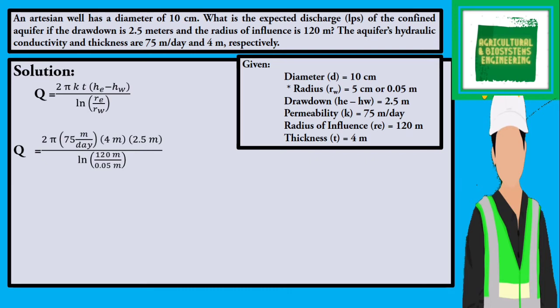Simplifying the equation, we have 4712.389 cubic meters per day, all over 7.783, giving us a value of 605.472 cubic meters per day. We can have this as our final value if we are asked to use this unit.